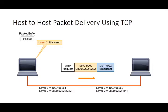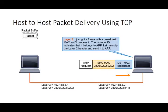That frame travels across the wire as a broadcast and any machine on the layer two network hears it. In this case it reaches the intended device. Layer two on the receiving device says: I just got a frame with a broadcast MAC address, so I need to process it. The protocol ID says it is ARP, so strip off the layer two header and send it up to the ARP application.